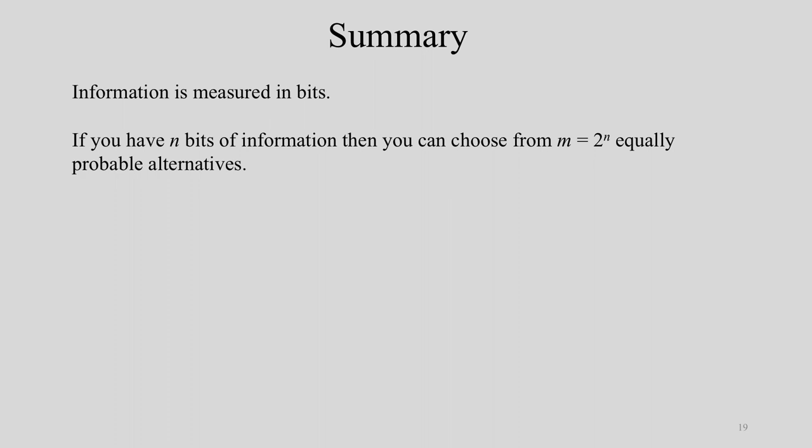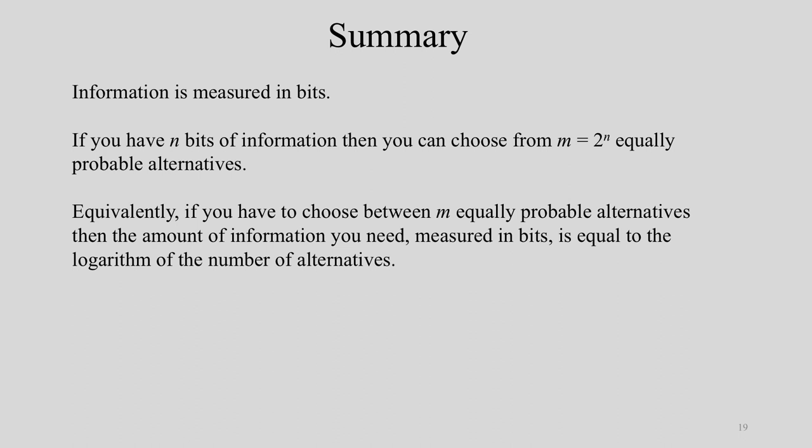Finally, let's summarize this presentation. Information is measured in bits. If you have N bits of information, then you can choose from M equals 2 to the power N equally probable alternatives. Equivalently, if you have to choose between M equally probable alternatives, then the amount of information you need, measured in bits, is equal to the log of the number of alternatives.